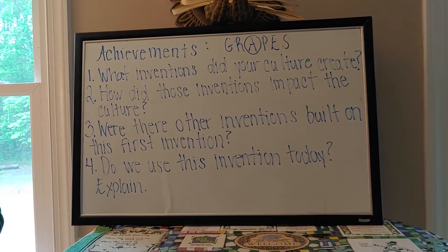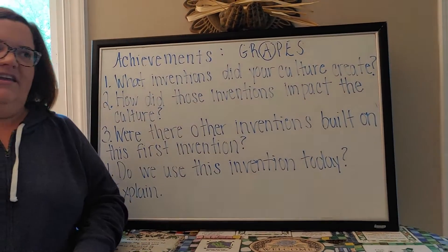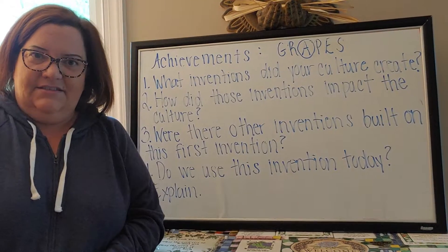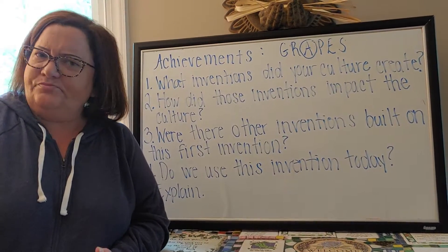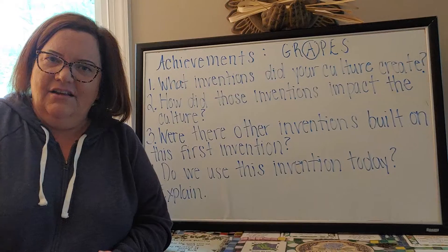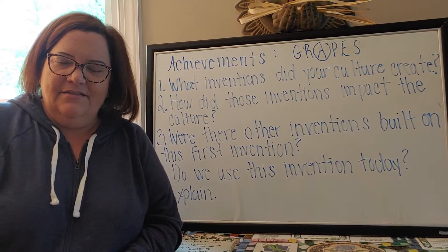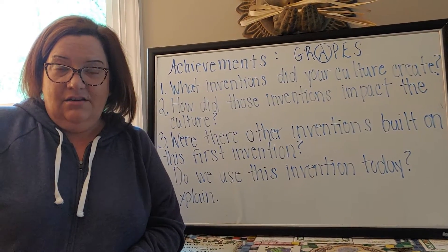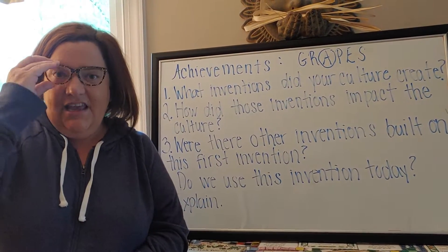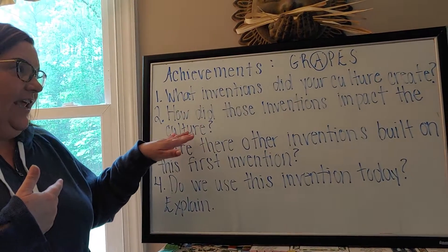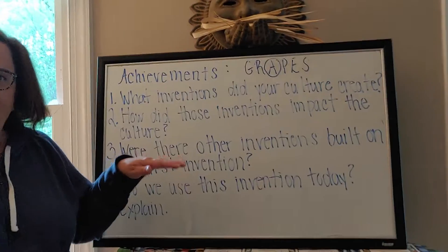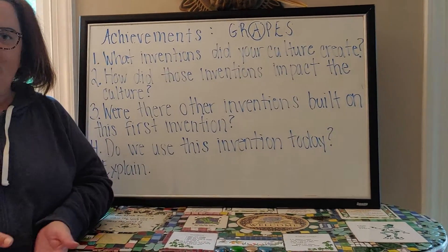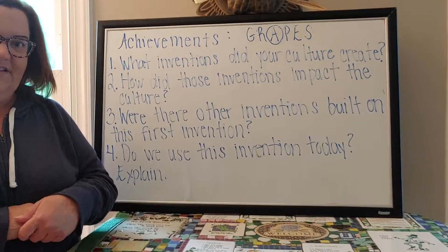The next question is: how did those inventions impact the culture? If we think of some of the irrigation uses we've learned about with Egypt and Mesopotamia, we know that they invented a lot of irrigation methods. Those irrigation methods impacted the culture because they were able to eat and stay in one place, because they could continue to farm throughout the seasons.